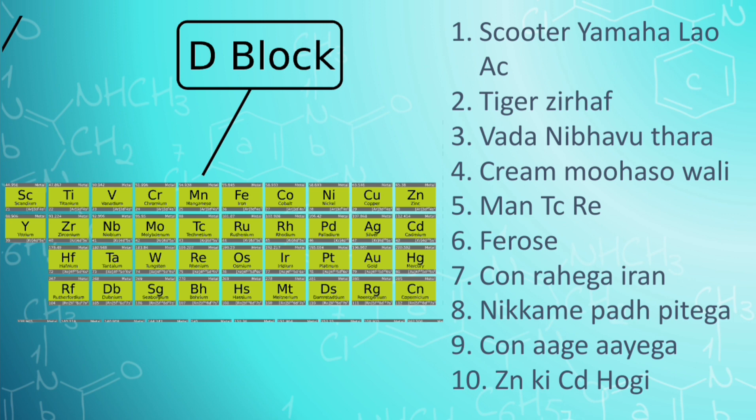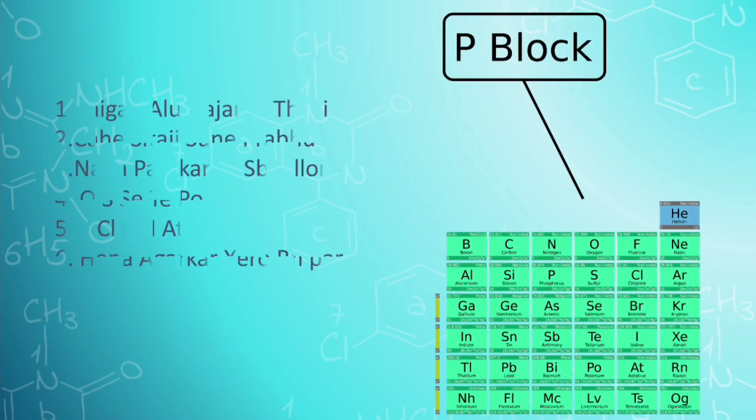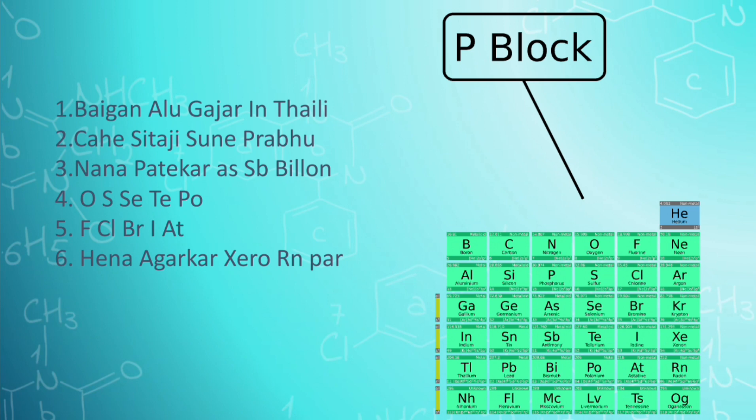Then zinc cadmium and mercury, the memorized trick for it is zn ki cd hogi. Then we see P block elements. It contains boron aluminum gallium indium and thallium, the memorized trick for it is bangan aloo gajar in thali. Then carbon silicon germanium tin and lead, the memorized trick for it is kahe sitaji sitaji sune prabhu. Then nitrogen phosphorus arsenic antimony and bismuth, then memorized trick for it is nana patekar as sabi laan. Then oxygen sulfur selenium tellurium and polonium, the memorized trick for it is o sase tepo. Then comes fluorine chlorine bromine iodine.